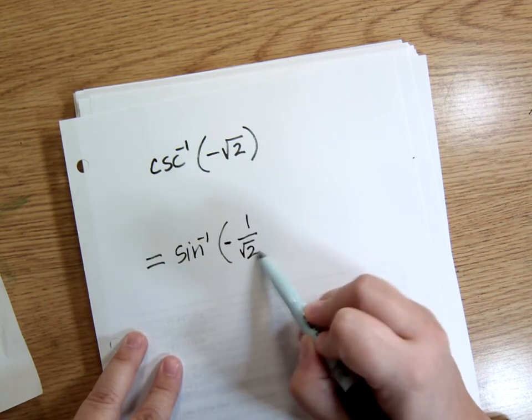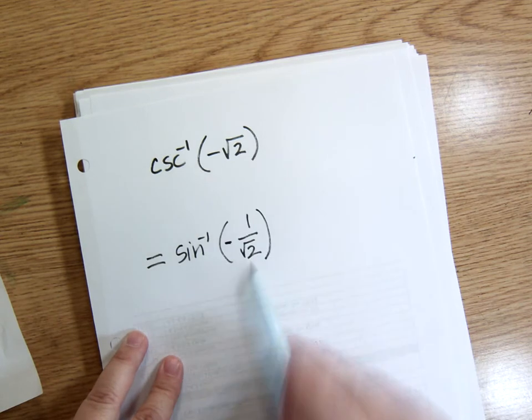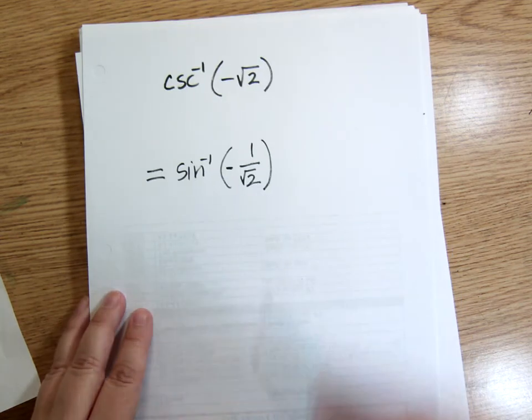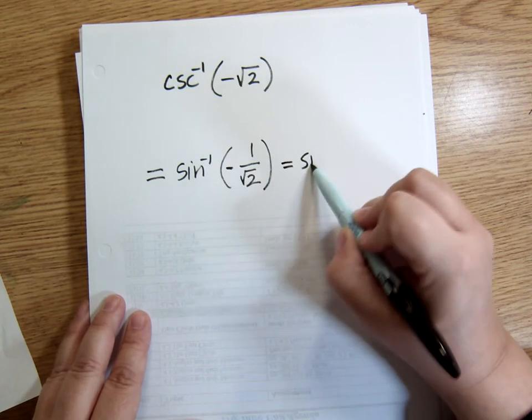It has to stay negative. And remember that 1 over square root of 2, we're used to seeing in its rationalized form, which is square root of 2 over 2.